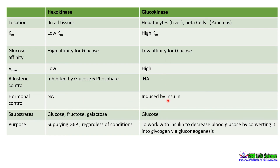There is no hormonal control in the case of hexokinase, whereas glucokinase is induced by insulin. Hexokinase phosphorylates substrates such as glucose, fructose, and galactose, whereas glucokinase will work only when glucose is available. The main purpose of hexokinase is supplying glucose-6-phosphate regardless of the condition — it will work even during the fasting stage. Whereas glucokinase works with insulin to decrease blood glucose by converting it into glycogen, and it is active only after a meal.